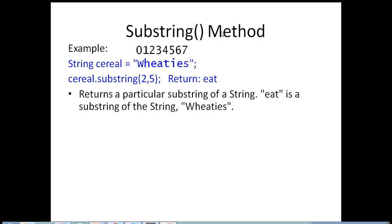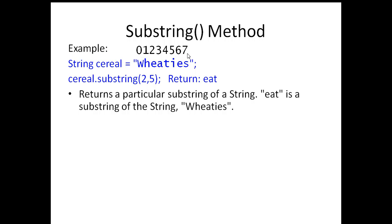We're going to take a look at the last method of our series of three string methods, and we're going to go through the substring method. Here is an example. Let's say we have a string. The name is Serial and the value of it is Wheaties. The substring method is going to use the positions — 0, 1, 2, 3, 4, 5, 6, 7. It's written like the other methods: variable dot method, in this case substring, and then the set of parentheses.